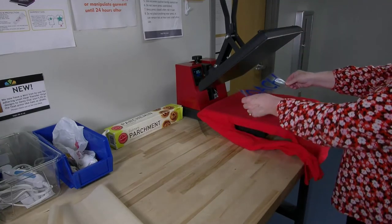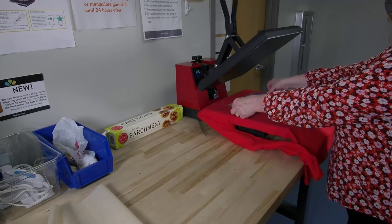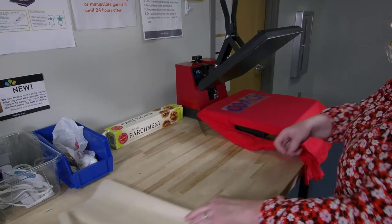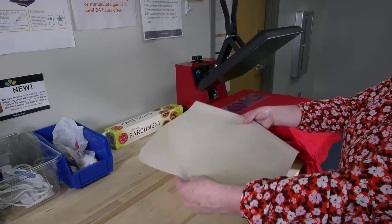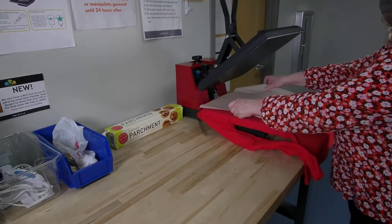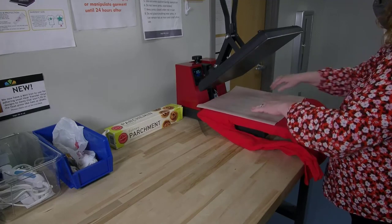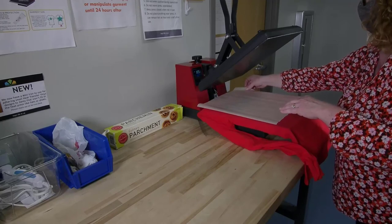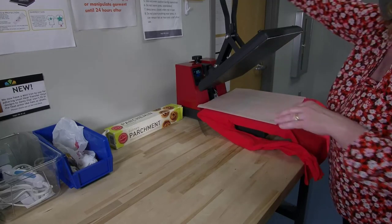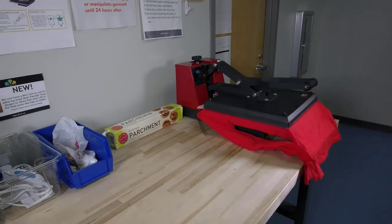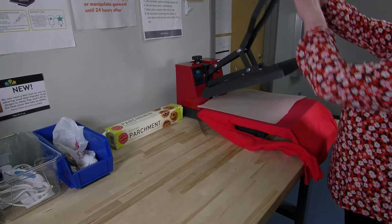Then place your vinyl on the shirt where you want it, with the plastic side on top and the sticky side down on the fabric. You should be able to read the design correctly. Place a piece of parchment paper on top of the plastic and lower the arm of the heat press. Make sure you press on the arm firmly. When the time is up, the press will beep. Lift the arm and carefully remove your shirt.